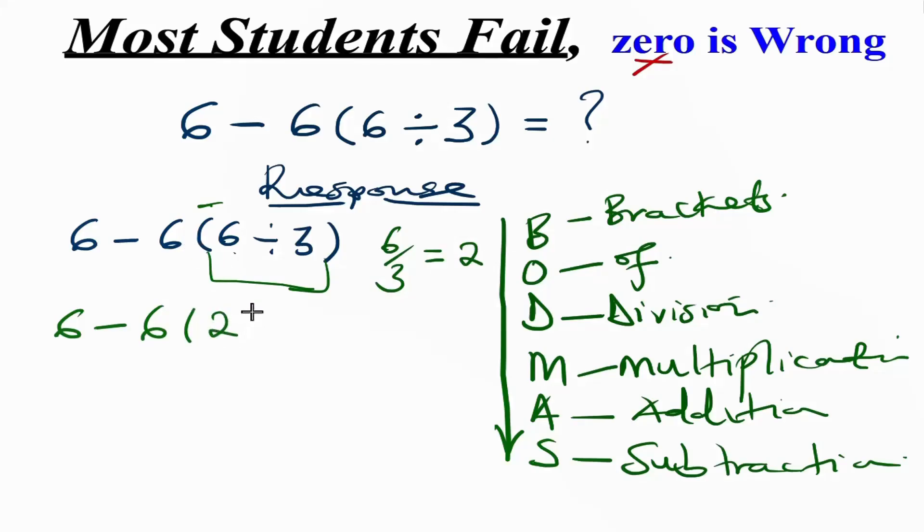And this is the same as having 6 minus 6 multiplied by 2. So we now come back to this BODMAS. Brackets, we don't now have brackets at this level. We don't have the of, we don't have the division, but we can see we have multiplication in here. This is a multiplication symbol, it means that we are going to multiply first before we do the subtraction.